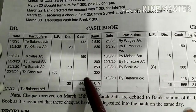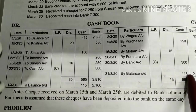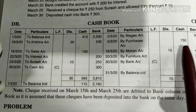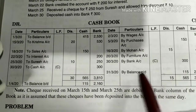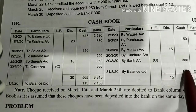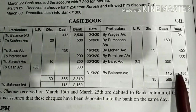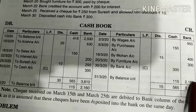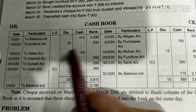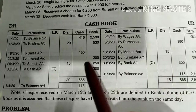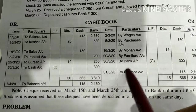Now we calculate totals for both cash debit and credit sides, then subtract credit from debit to get balance c/d of 115, since debit side total was 565 and credit side total was 450. Similarly, for the bank column: debit side total is 2160, and we get the bank balance c/d. For the discount columns, we calculate totals for both sides but do NOT subtract them to get a balance, because these are two different accounts — discount allowed and discount received. Discount allowed total is 30 and discount received total is 15.